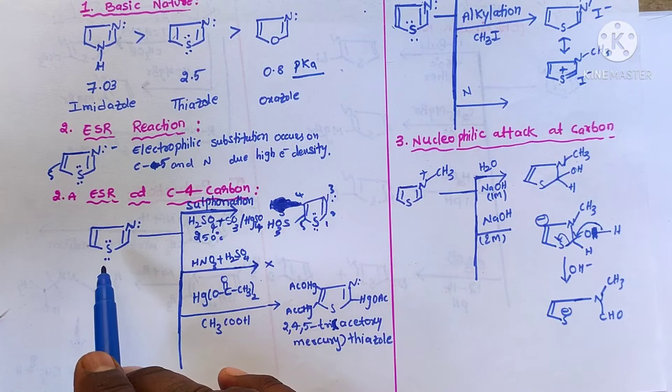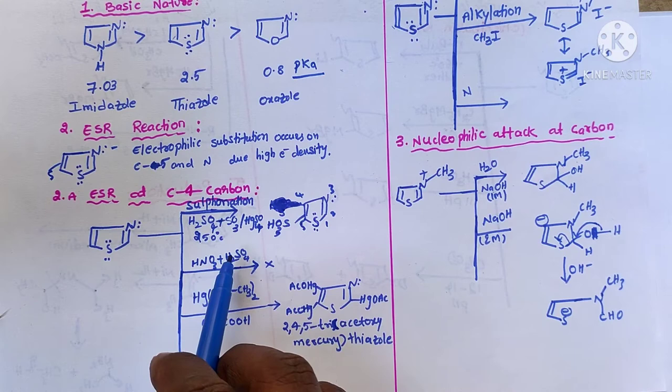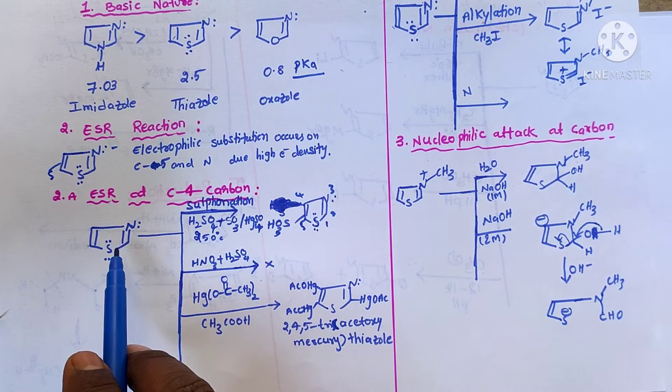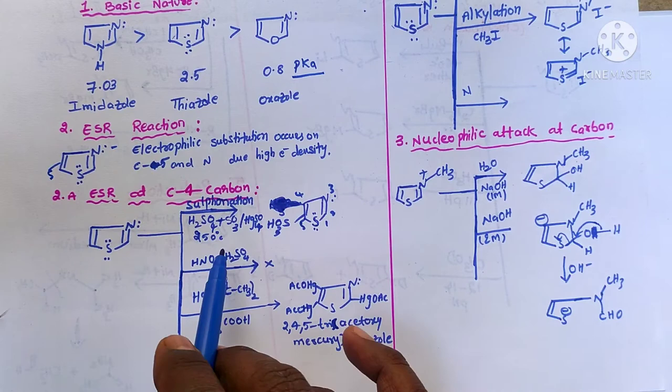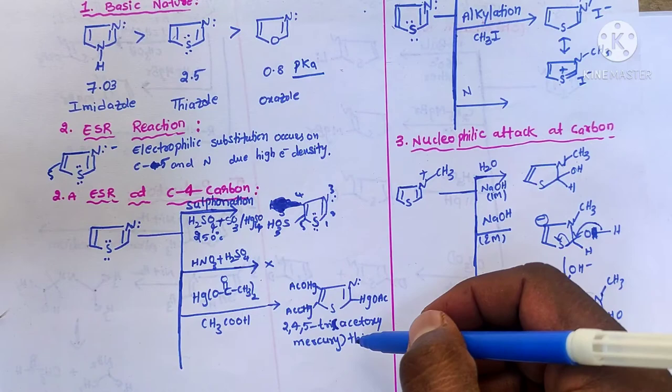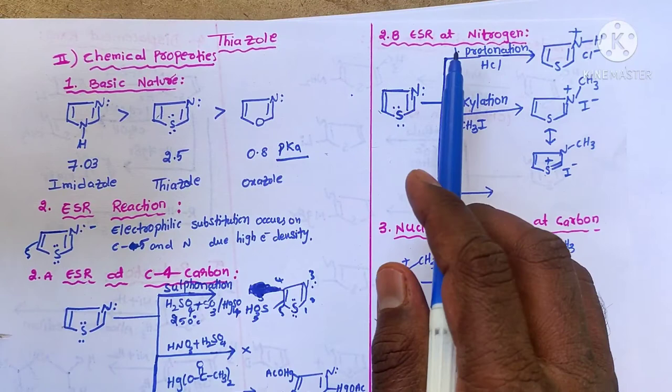Thiazole generally does not undergo nitration because it is somewhat less aromatic. However, whenever electron-donating groups are present in thiazole it easily undergoes nitration. When treated with mercuric acetate in the presence of acetic acid we get 2,4-diamino triacetoxy thiazole.